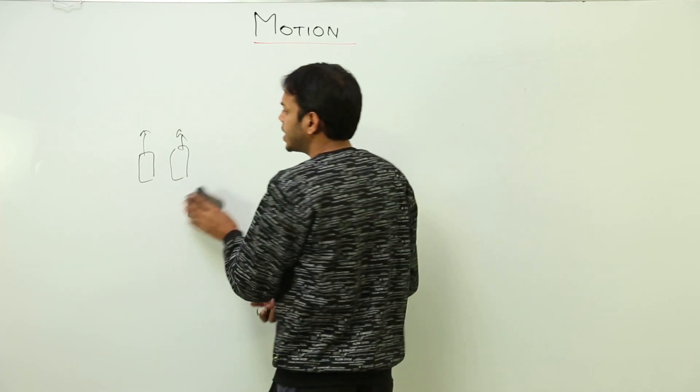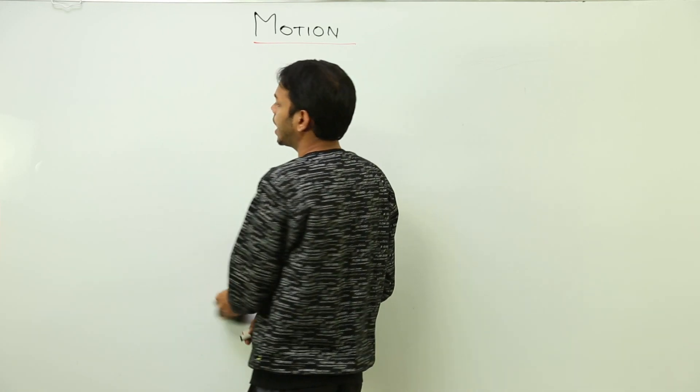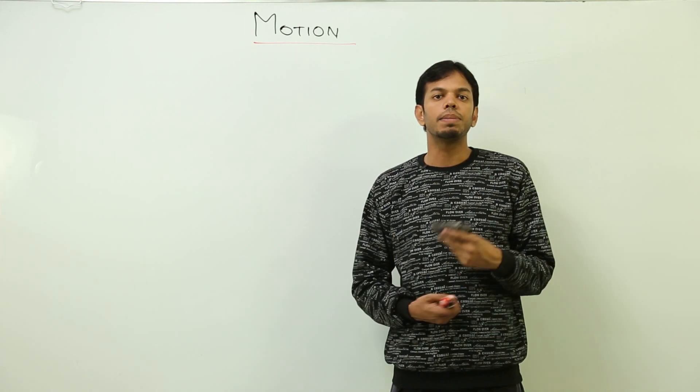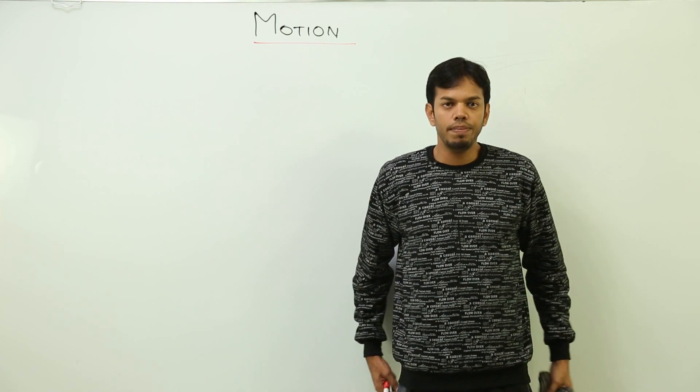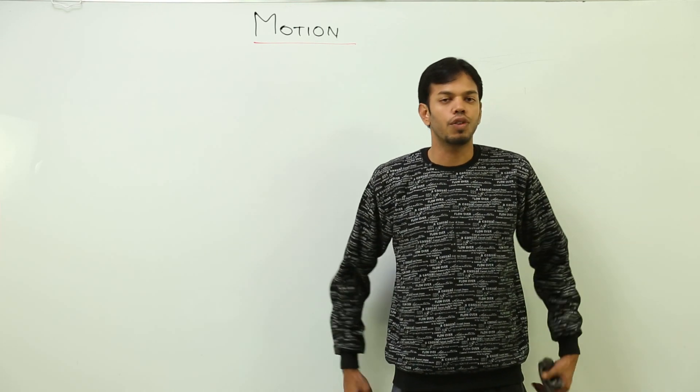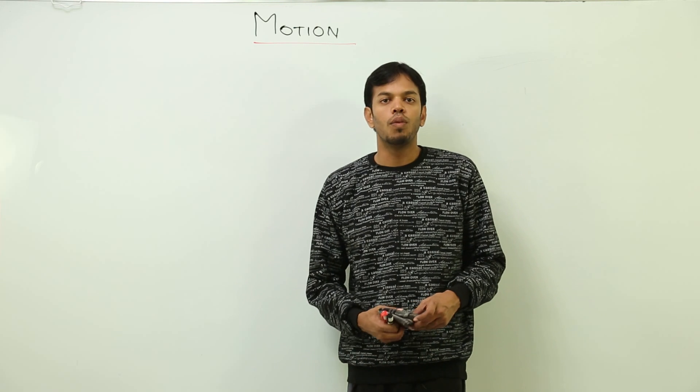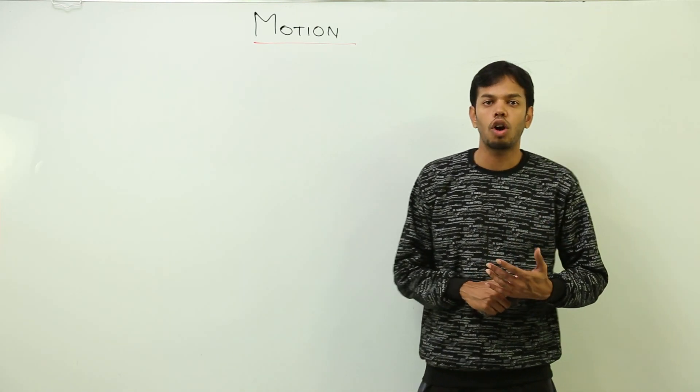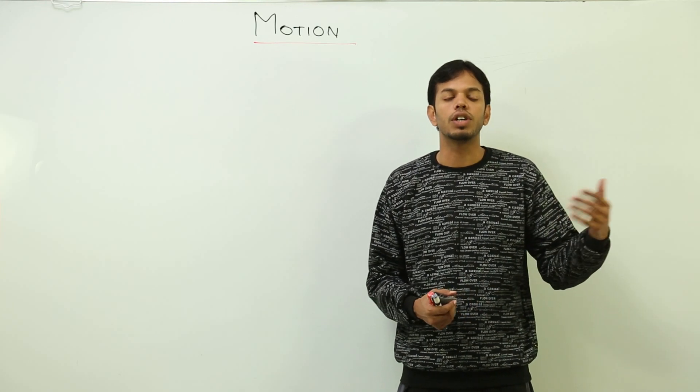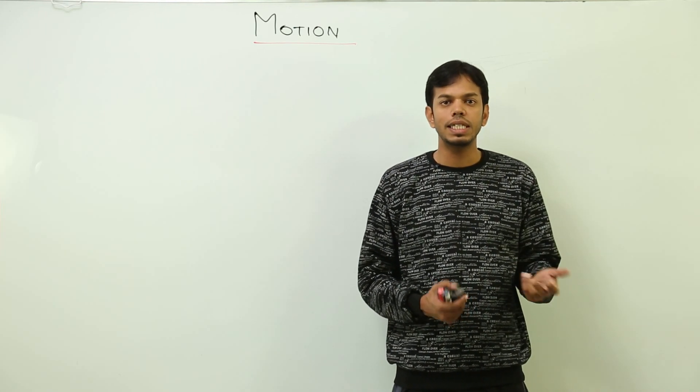So motion is a very simple thing - when something changes its position with respect to time. Now motion could be very complex as well as very simple. For example, simple motions could be watching the motion of an object or a car which is moving by your side, in front of your house, in front of your school, motion of a bus. These are simple motions.